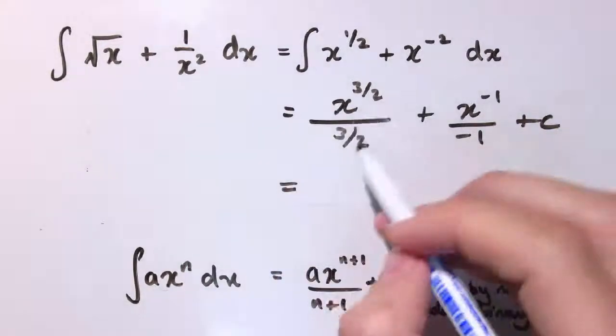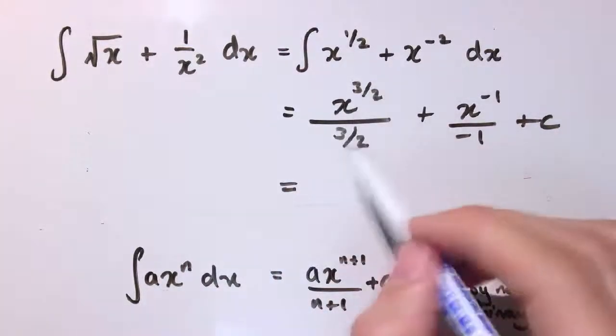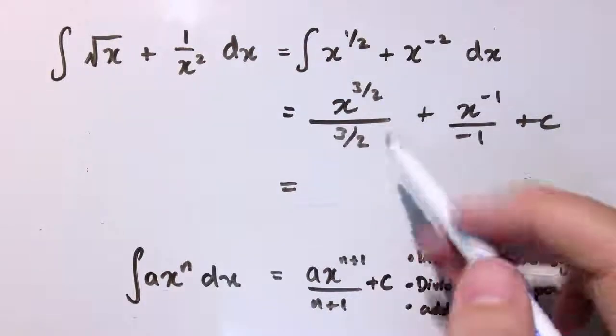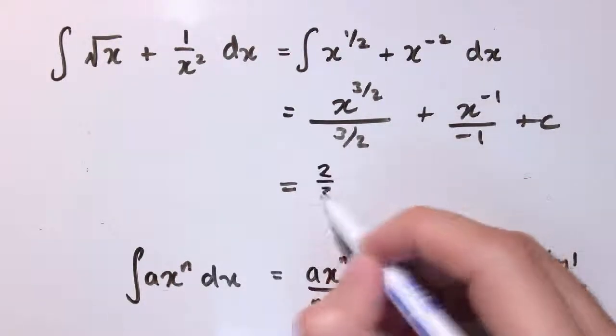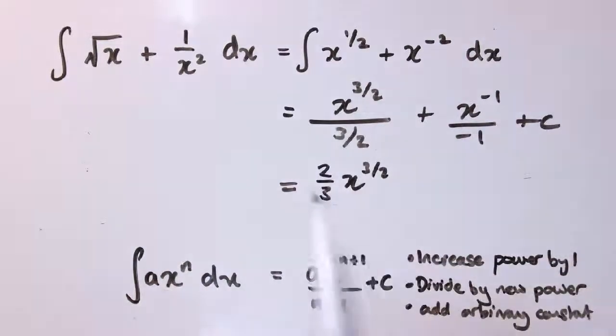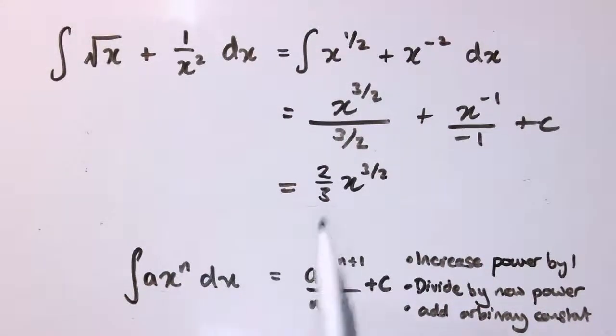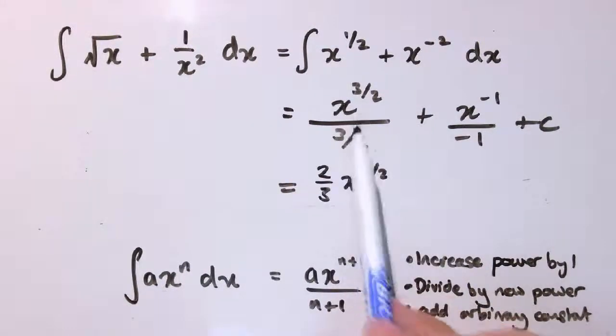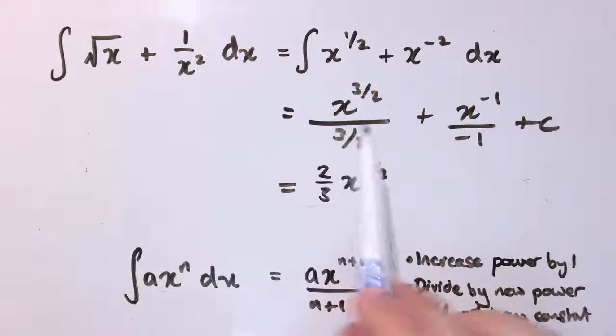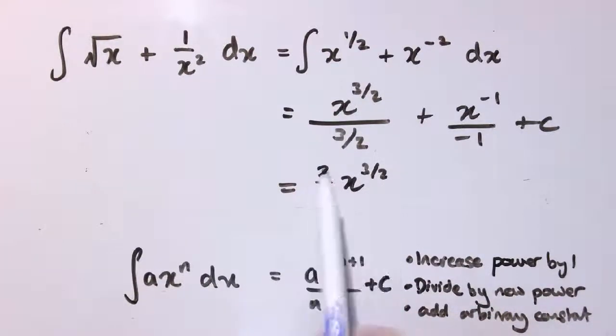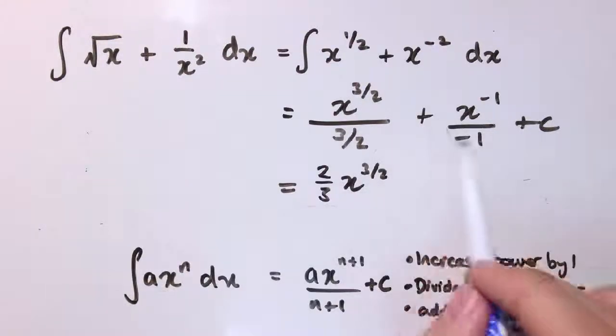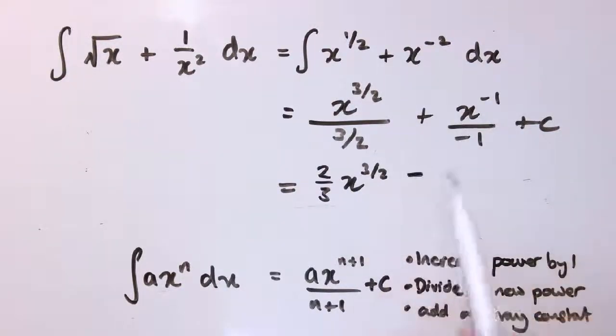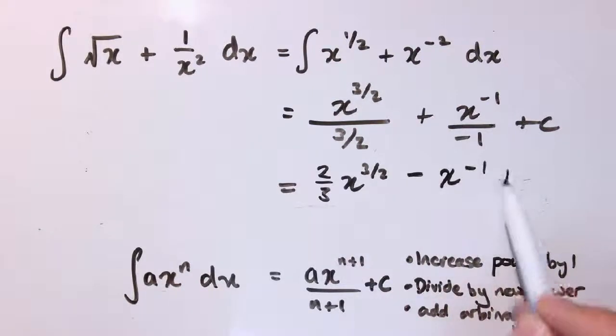You've got to be pretty confident with your fractions and things as always here. Dividing by 3 over 2 is the same as multiplying by 2 thirds. So this is 2 thirds x to the 3 over 2. And really I think you should probably just write this line down before writing this one down if you can at all, because this is very messy. But if you need to do it to start off with, do it. This is our aim: 2 thirds x to the 3 over 2. And then we've got plus x to the minus 1 divided by minus 1, so that's minus x to the minus 1 plus c.